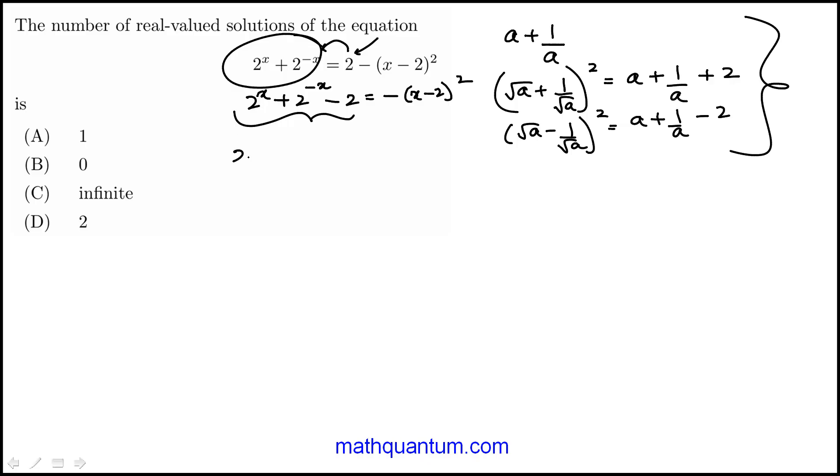This would become 2 to the power of x over 2 plus 1 over 2 to the power of x over 2 squared, and actually this would be minus as I just mentioned, and that's equal to minus of x minus 2 squared.